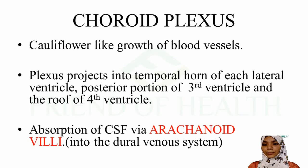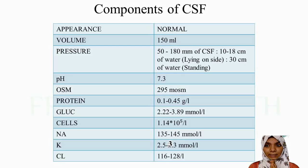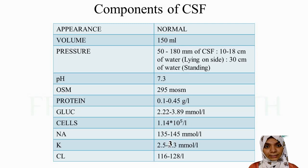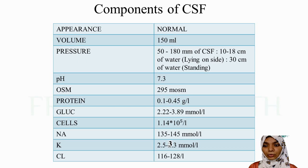CSF is absorbed through the arachnoid villi into the dural venous sinus system. The components of CSF are a very important and frequently tested topic. Please make a table of the normal values - volume, pressure, glucose, cells, etc. - as many questions have been asked from this part.